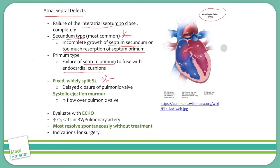In the case of an atrial septal defect, it's not only with breathing in that we have increased venous return. With every beat, blood flows down the pressure gradient from the left atrium into the right atrium. So with every beat, we have an increased amount of blood in the right ventricle and flowing out into the pulmonary artery. That means with every beat, instead of just with breathing in, we have a splitting of the S2.